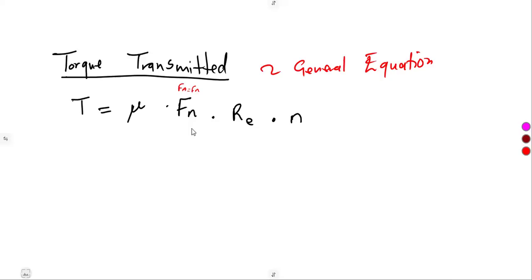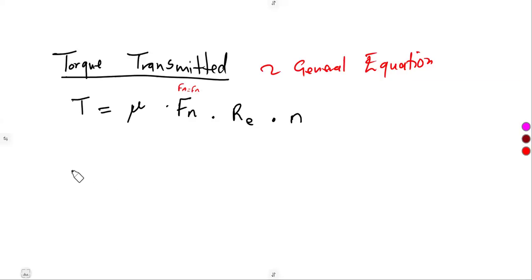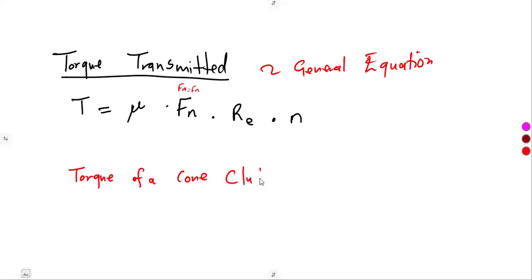We are going to consider the torque for a cone clutch specifically, still under the uniform pressure theory, which applies to new clutches.